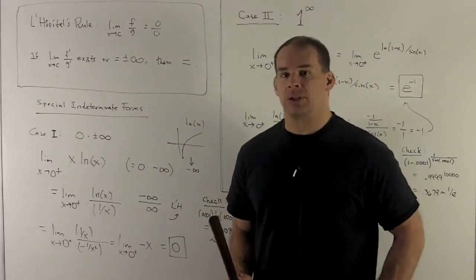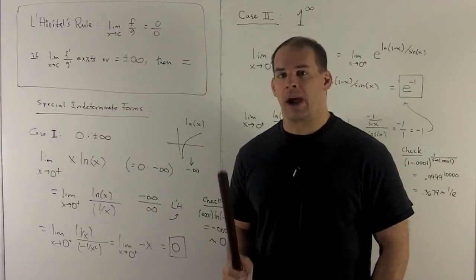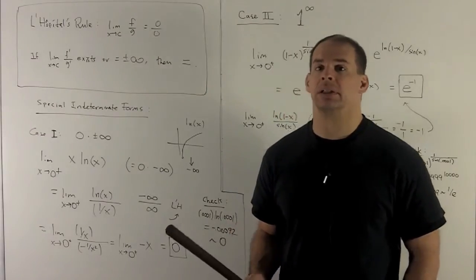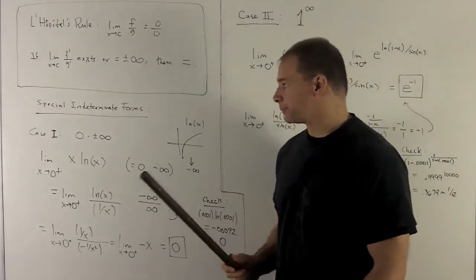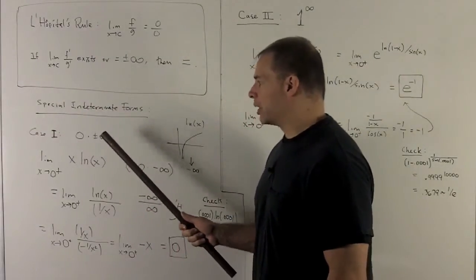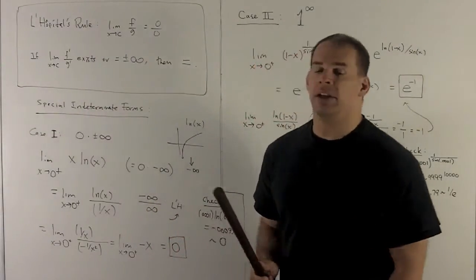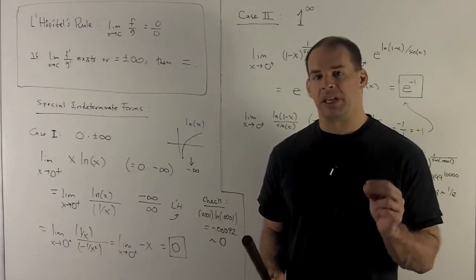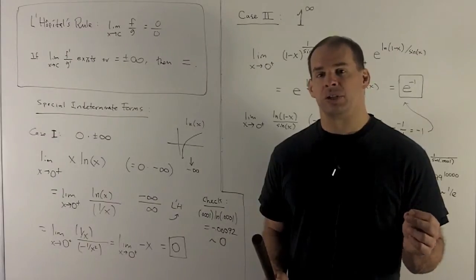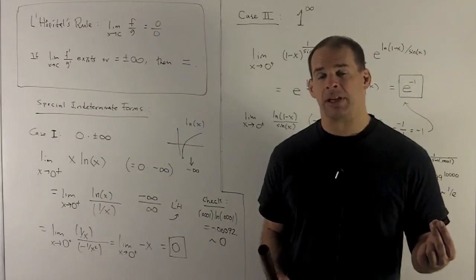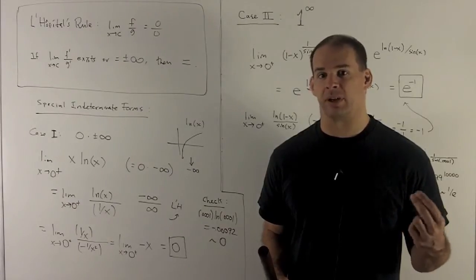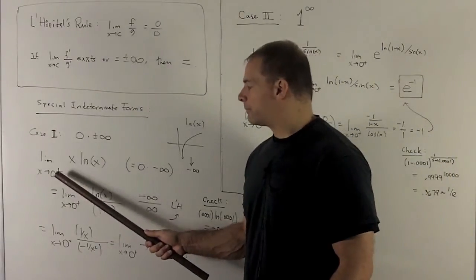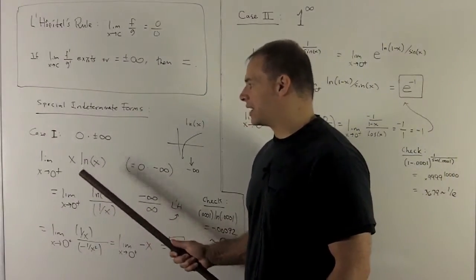What we want to do now is look at some special cases where the 0 over 0, or plus/minus infinity over plus/minus infinity, is not obvious. For the first case, this is going to be 0 times plus/minus infinity. The idea is we'll have to decide, by looking at the different pieces of the limit, which thing should be moved into the bottom or top to get the 0 over 0 or ±∞ over ±∞ form. Let's see the example: the limit as x goes to 0 from the right of x times natural log of x.